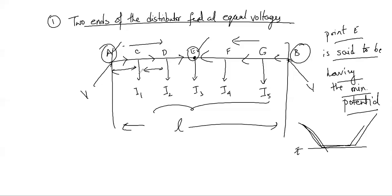The current tapped off at point E itself will be partly supplied from A and partly from B. So I3 equals X plus Y, where X comes from A and Y comes from B. The important conclusion is that at the point of minimum potential, current comes from both ends of the distributor.